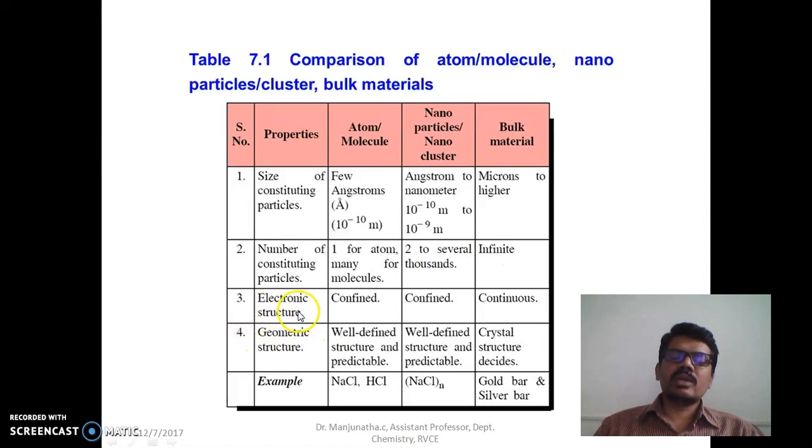The electronic structures in the atom scale - it is confined, they have less freedom for the movement. Even nanoparticles also the electronic structure is confined, they can't move freely in all the dimensions because the size is restricted. But in case of bulk material, the electronic structure is continuous because the size is more. And similarly the geometrical structure - the atoms, molecules structure can be clearly defined and predictable even for the nanoparticles nano clusters. We can define the structure and be predictable. Bulk material we actually define in terms of crystal structure. And these are some of the examples for this nano and this comparison.